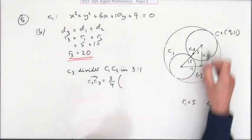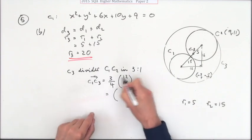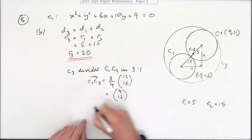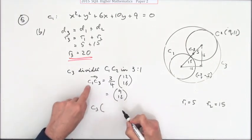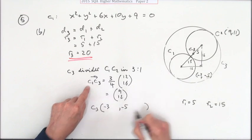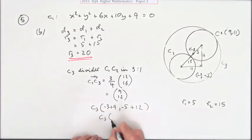So that means it's going to be 9 and that's 12. You can work out C3 starting at C1. C1 was negative 3, negative 5. Add on 9 and add on 12. That means C3 is going to be at 6, 7.